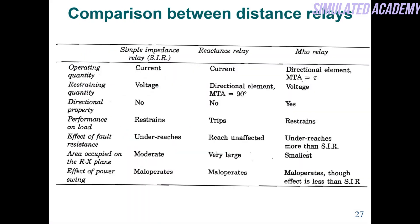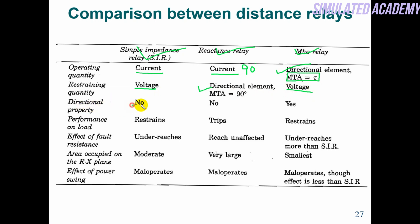So that is how you will use the Mho relay. This is a comparison table we discussed earlier for three different types of relay: simple impedance relay, reactance relay, and Mho relay. Let's summarize: operating quantities — current is involved in all three. For the Mho relay, the directional element with angle τ is the operating component. For the reactance relay, 90 degrees was maintained. Restraining quantities: voltage for simple impedance and Mho relay, while MTA for reactance relay. Directionality property is present in the Mho relay but not in reactance or simple impedance relay.